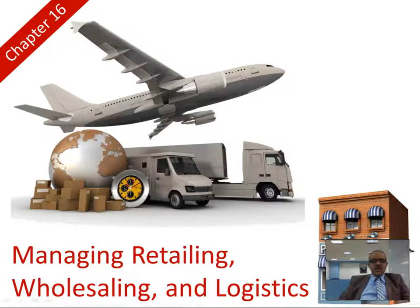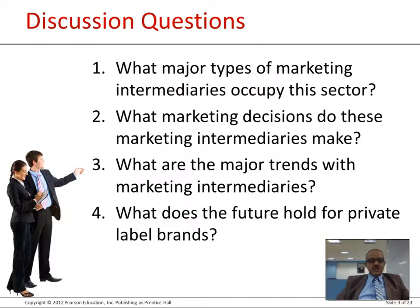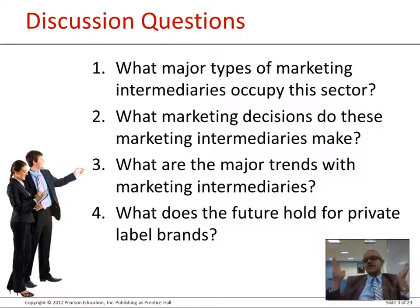Here we've got Chapter 16, which talks about managing retailing, wholesaling, and logistics. We're discussing four key questions, the first of which asks: what major types of marketing intermediaries occupy the sector?